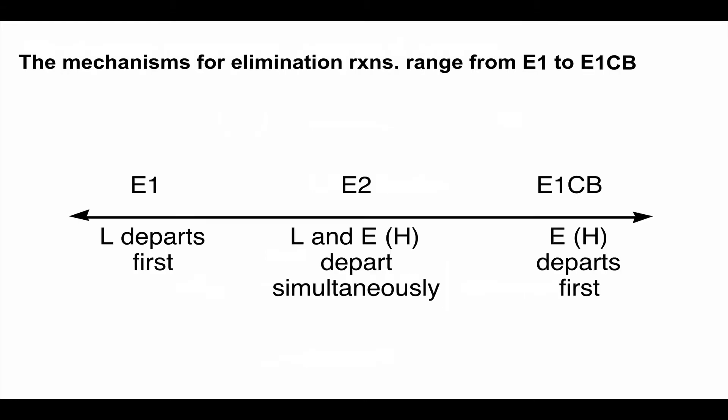Just like SN1 and SN2, E1 and E2 mean the same thing. That's elimination unimolecular for E1, and elimination bimolecular for E2. There's also a reaction known as E1cb, which I will include in these two videos on eliminations.